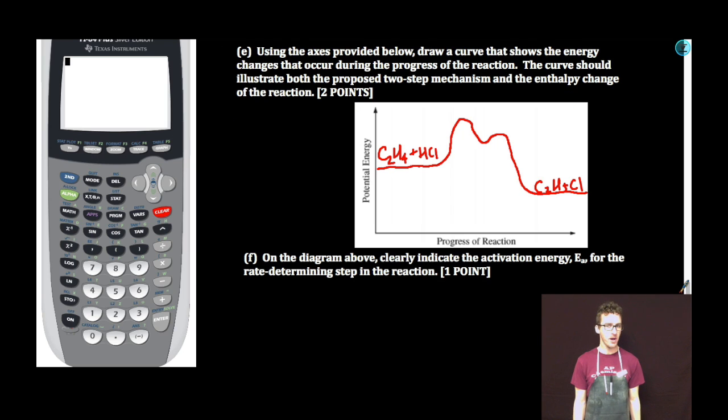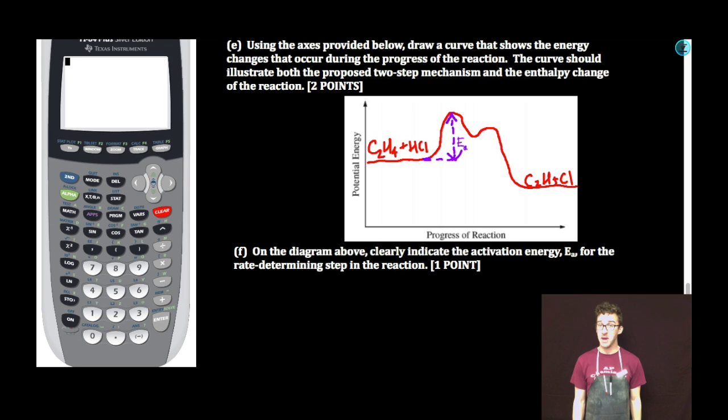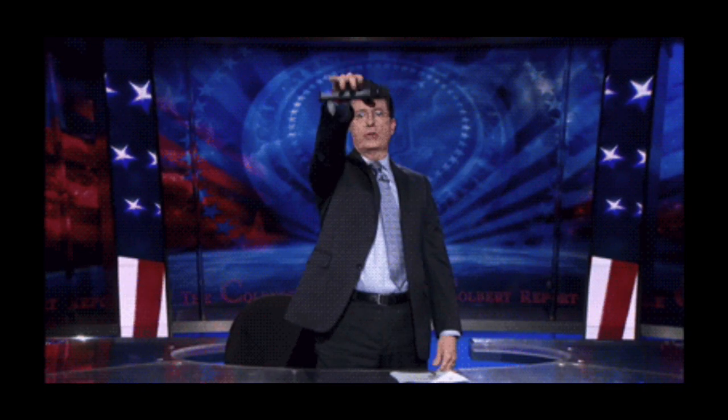Part F. On the diagram above, clearly indicate the activation energy for the rate determining step in the reaction. Here are my reactants. My activation energy, or the energy that I need to put in, in order for the reaction to begin to proceed, is indicated here by the dotted line. I'm going to label this activation energy E sub A. Now that was a fun free response. We got to draw, show off our art skills. What more could you ask for? Have a fantastic day. Boom!